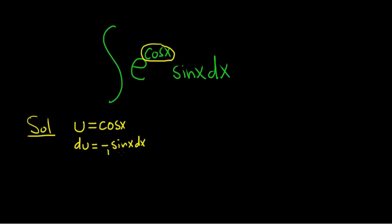So this needs to look like what's in our integral up here. So we have an extra negative sign, so what we'll do is we'll multiply by negative 1. That will give us negative du equals sine x, dx.